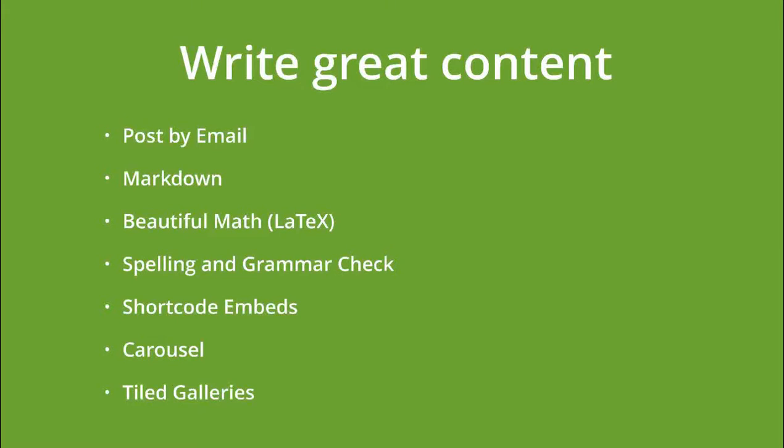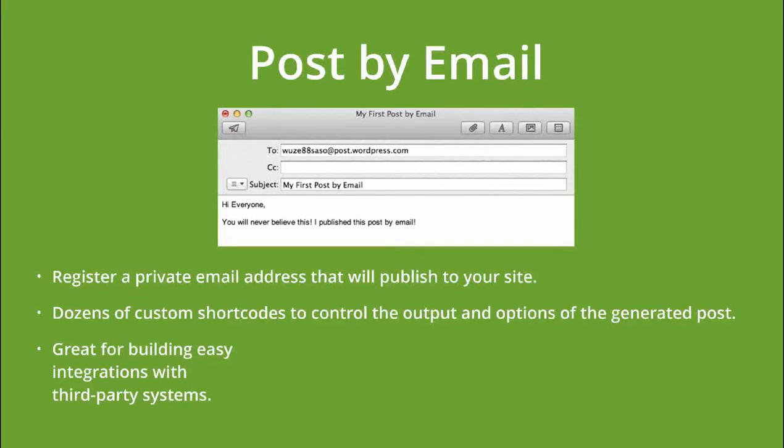The next big bucket is writing great content. Post by Email is a handy feature — if you're on the go and don't have time to load the WordPress app, you can simply send an email to the secret address that Post by Email creates for you, and it publishes a new post on your blog. The subject becomes the title, and the body becomes the post content.